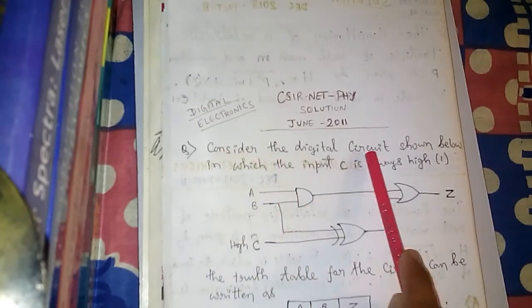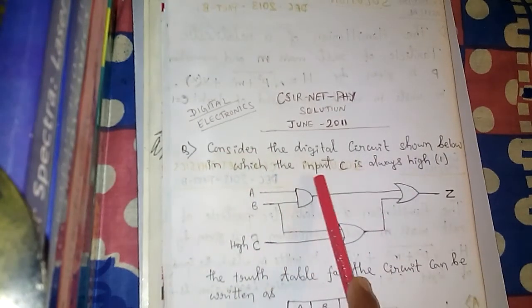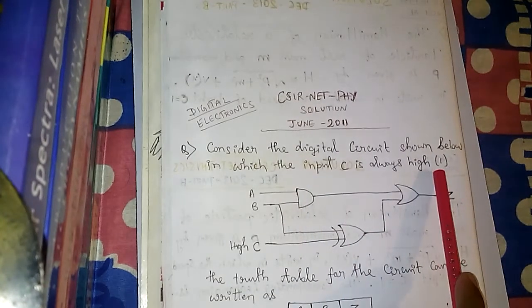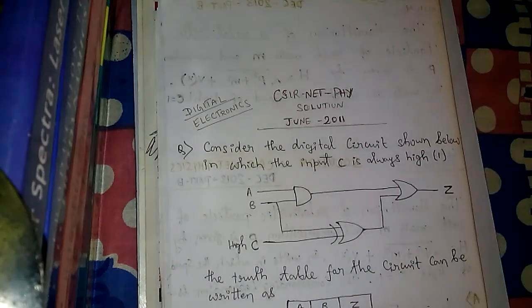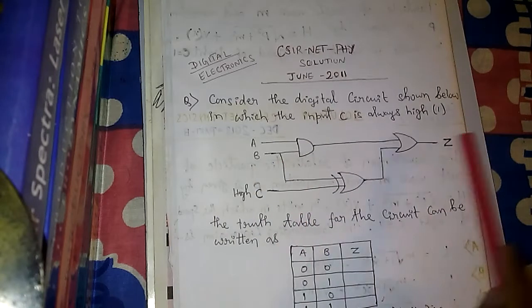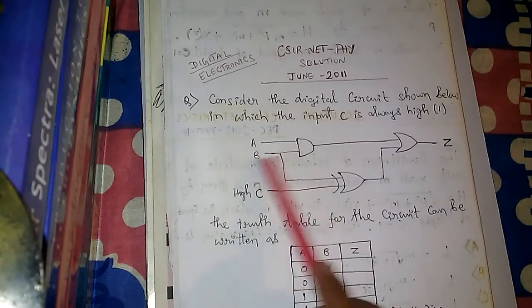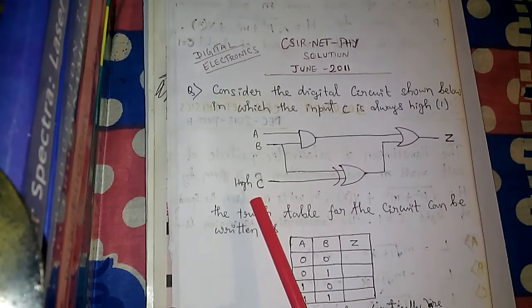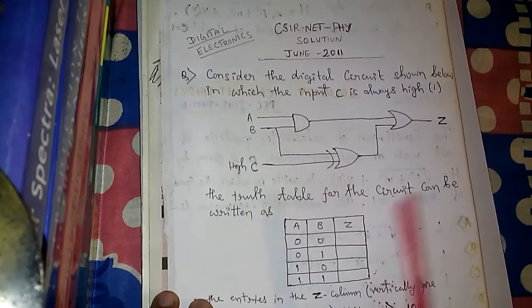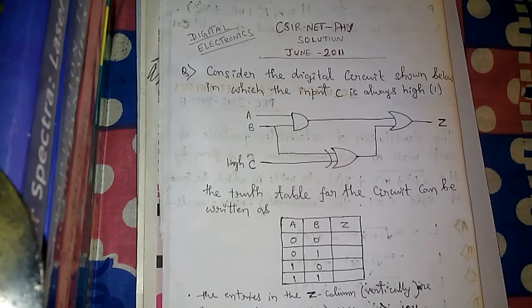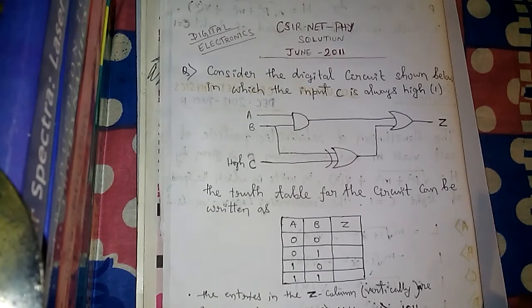The problem says: consider the digital circuit shown below in which the input C is always high — high means 1. In Digital Electronics, a high signal is represented by digit 1, and a low signal is represented by digit 0. These two digits, 1 and 0, are called binary digits. They are also called bits.